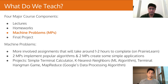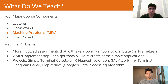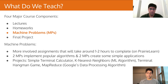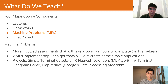We also release four machine problems throughout the course of the semester. These are more involved assignments that will take one to two hours to complete, also on Prairie Learn. Two of these MPs implement popular algorithms — we'll describe the algorithm, tell you how to implement it, and you'll do so in Rust. Specifically, the k-nearest neighbors algorithm and Google's MapReduce. Two of the MPs are simple applications: the very first MP is a terminal calculator and the third MP is a hangman game in your terminal.